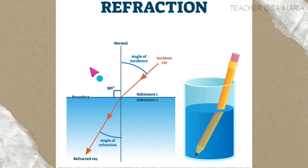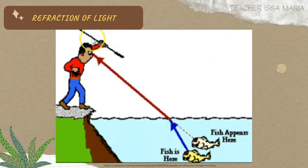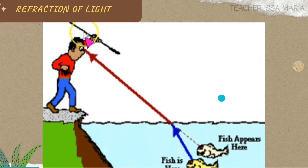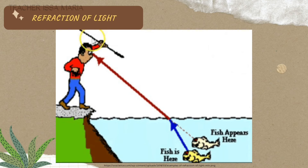So why is spearfishing so hard to do? Because of the bending of light. The light source causes bending. If you ask where the fish actually is — our perception tells us the fish is in one location, but due to the bending of light, the fish is actually in a different position. So if you are in that situation, you need to account for light bending to accurately aim at the fish.